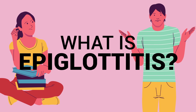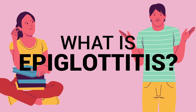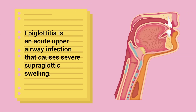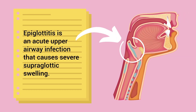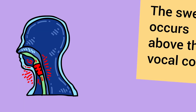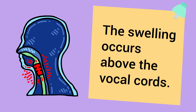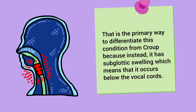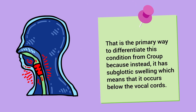Epiglottitis is an acute upper airway infection that causes severe supraglottic swelling. An important thing to remember is that the swelling occurs above the vocal cords. That is the primary way to differentiate this condition from croup.